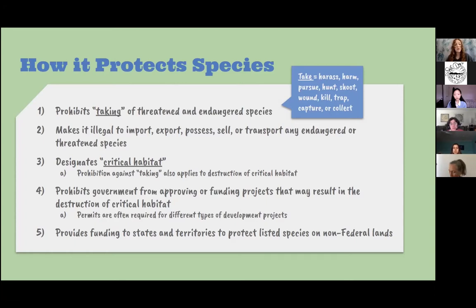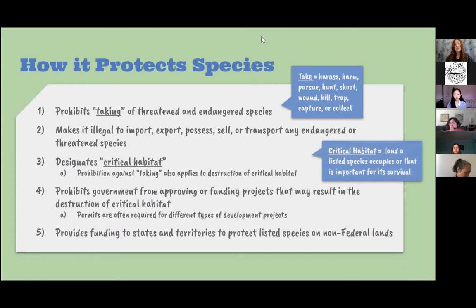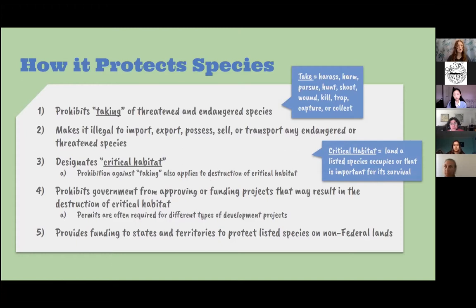Thirdly, it designates what is called critical habitat — any land that a listed species currently occupies or that is important for its future survival. Once critical habitat is designated, it is protected from taking; you are not able to destroy that critical habitat. The ESA also prohibits the government from approving or funding any projects that might result in the destruction of critical habitat, and permits are often required for development projects near or on critical habitat.